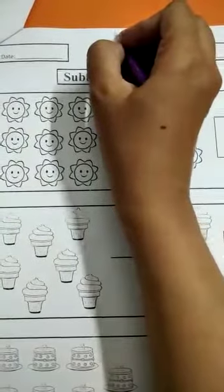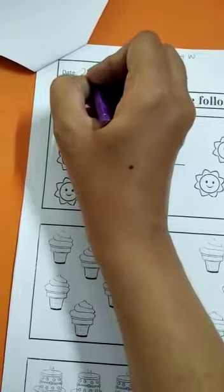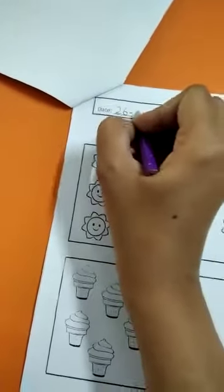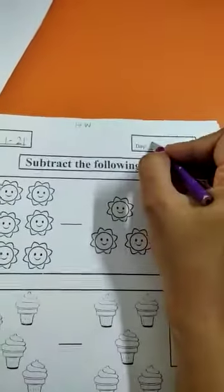First of all, write H.W. Write the date: 26-1-21. And today is Monday.